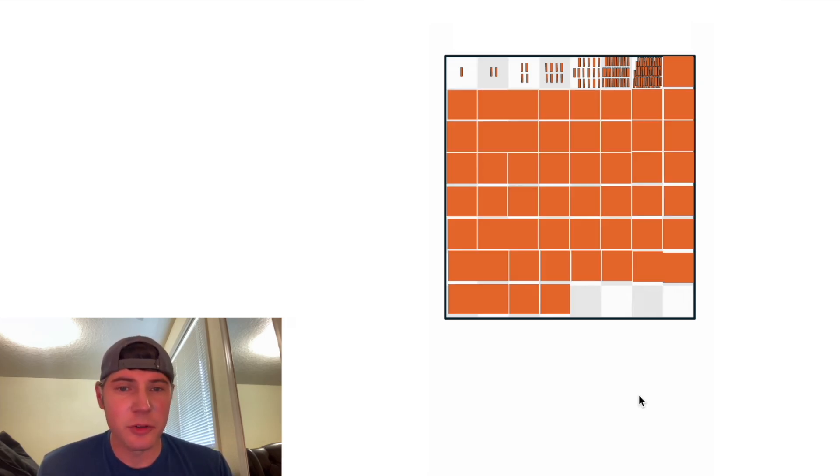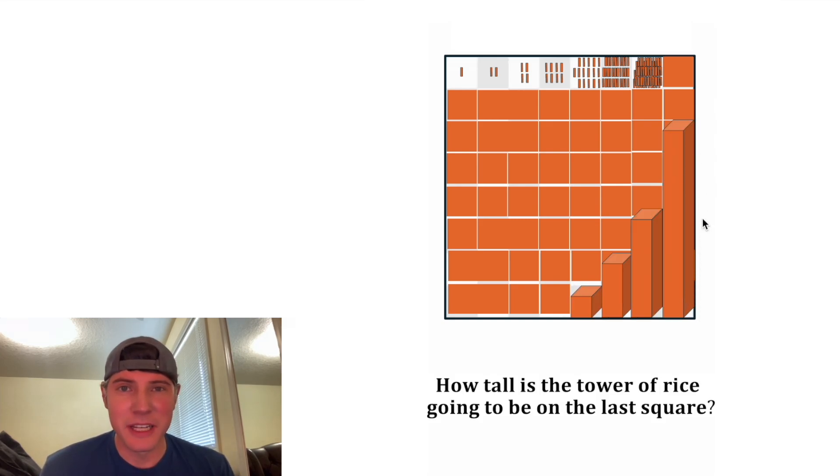If you keep doubling for every single square, eventually the pile of rice is going to start getting some height to it. And the question I have is how tall is this tower of rice going to be on the last square? So how tall do you think it's going to be?